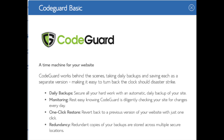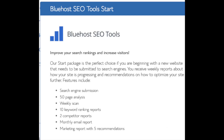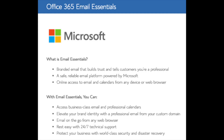CodeGuard creates daily backups and allows you to restore your site with a click of a button in case something happens - there are free alternatives that work just the same. SEO tools you can keep unselected - this add-on submits your site to search engines and provides a report on rankings, but you can submit your site to search engines for free. Office 365 Email Essentials is Microsoft Outlook - if you'd like your email powered by this add-on feel free to keep it selected, but it isn't necessary. All these add-ons are completely optional.